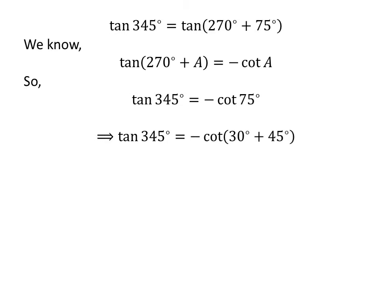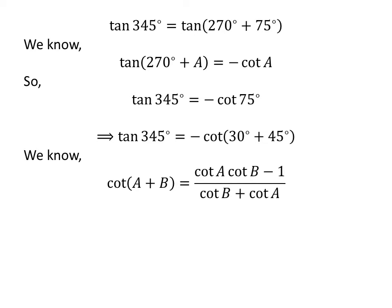Again, 75 degrees is equal to 30 degrees plus 45 degrees. So tangent of 345 degrees is equal to minus cotangent of 30 degrees plus 45 degrees. We know the trigonometry identity: cotangent of A plus B is equal to cotangent A times cotangent B minus 1, upon cotangent B plus cotangent A. The proof of this identity is explained in the video appearing in the upper right corner.